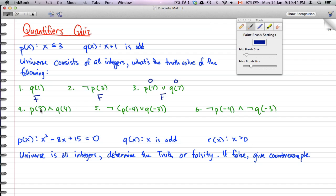For number 4, we have p(3). Now 3 is equal to 3, so we'll just give that a 1. Now q(4): we're substituting 4 for the x, 4 plus 1 is 5, and that is odd. 1 and 1, this will give us a true.